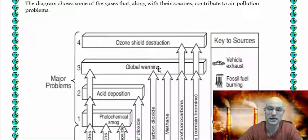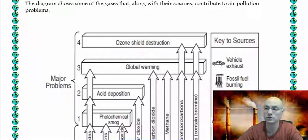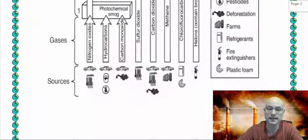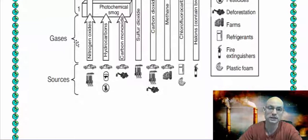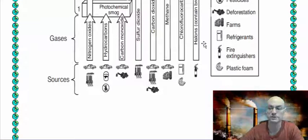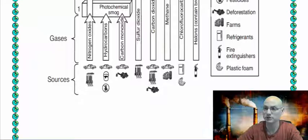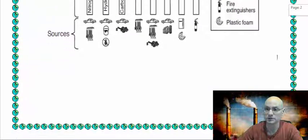Take note of all these key sources. One of the major problems are in these boxes here. The arrows actually represent the gases. The problem sources are down here, the gases are the arrows, and the boxes represent the problem.